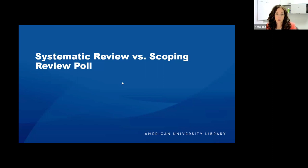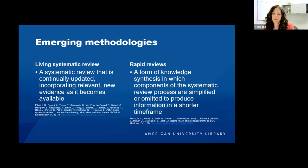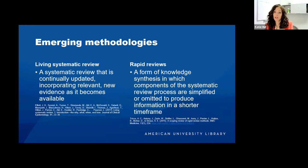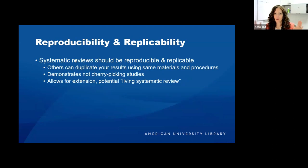Other review types gaining popularity include the living systematic review, which is continually updated to incorporate new evidence as it becomes available. In addition, the rapid review omits some processes you'd find in a systematic review to produce information in a shorter time frame. Policy makers often lean on rapid reviews because the full systematic review can take a year to 18 months to finish, and sometimes we don't have that kind of time.